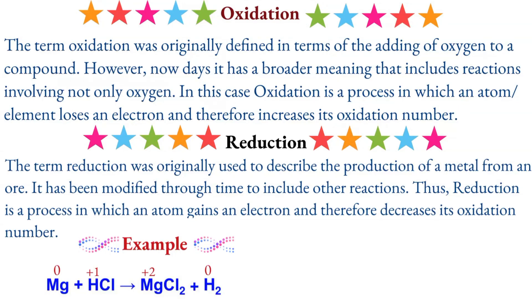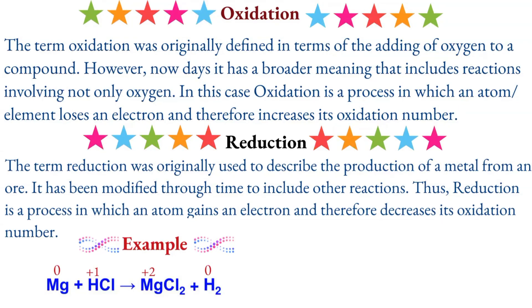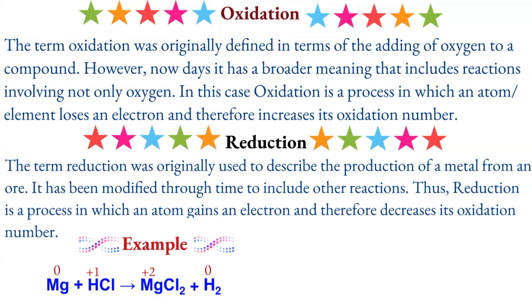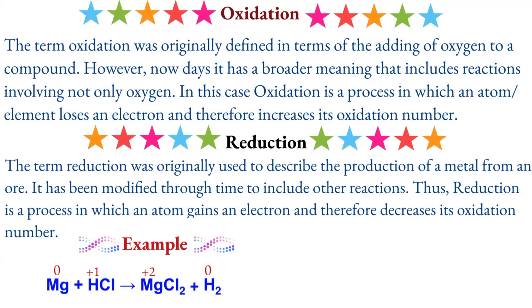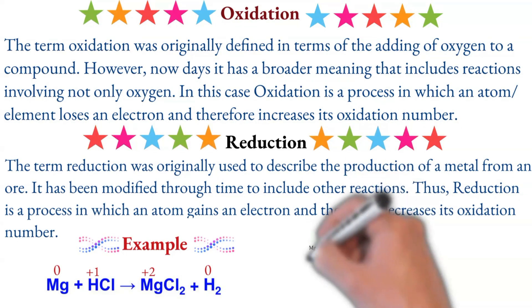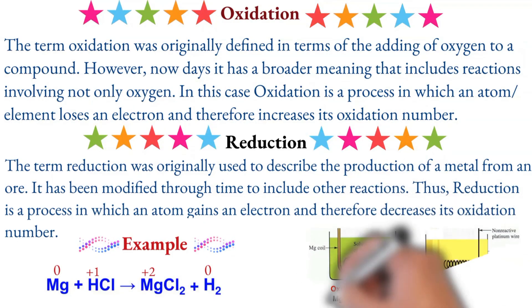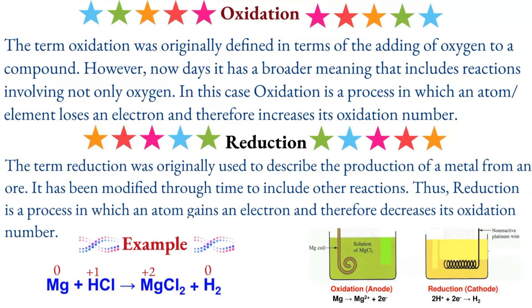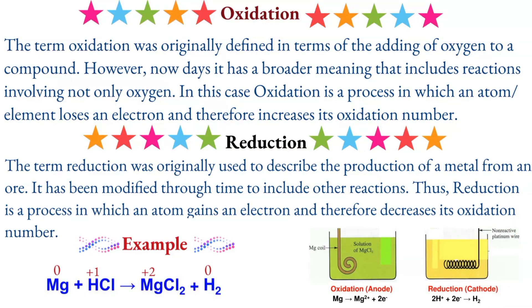Magnesium is oxidized. Its oxidation number increases from zero to plus 2. Chlorine is a spectator. Hydrogen is reduced from plus 1 to zero.